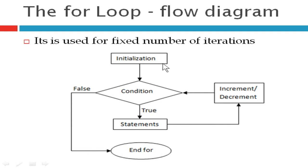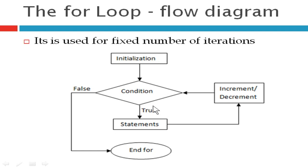You can notice one thing: the initialization statement is used only for the first time, after which it is not used again. It checks only the condition and then increases or decreases the control variable. Also note that after initialization, it goes directly to the condition — it does not go to the increment or decrement statement first. Only after executing the body of the loop does it go to the increment or decrement statement.